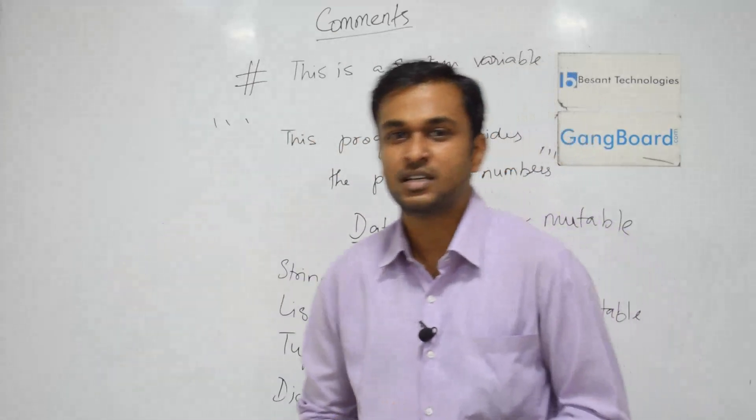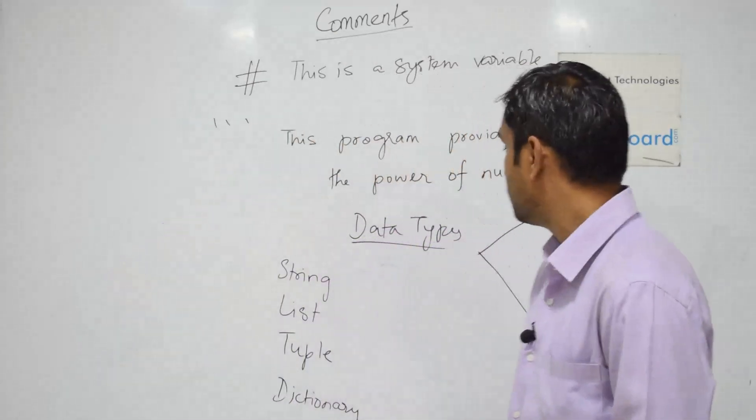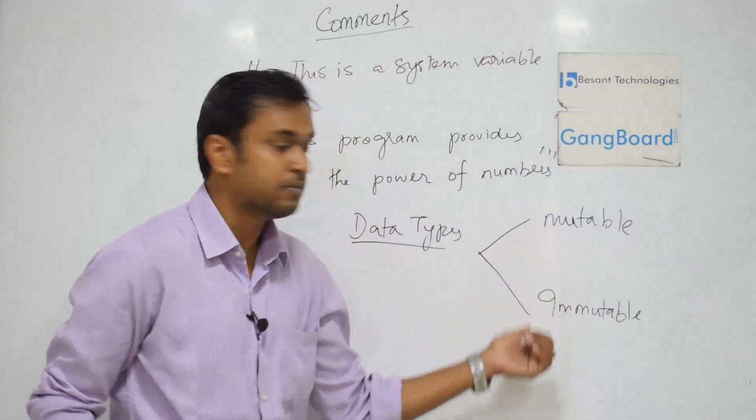We have majorly two types of data types: one is mutable data type and one is immutable data type.